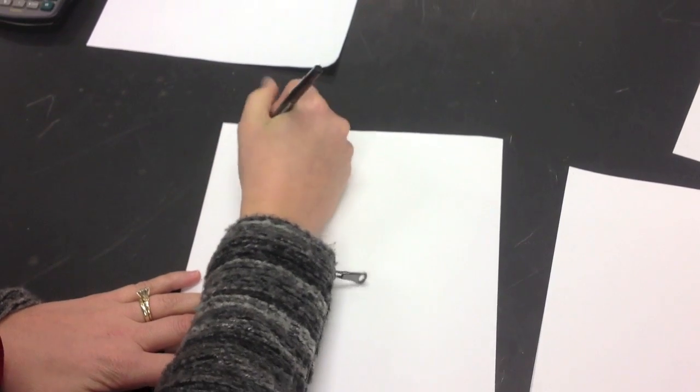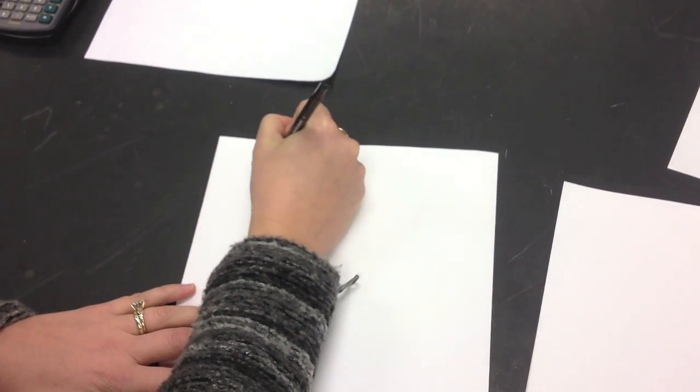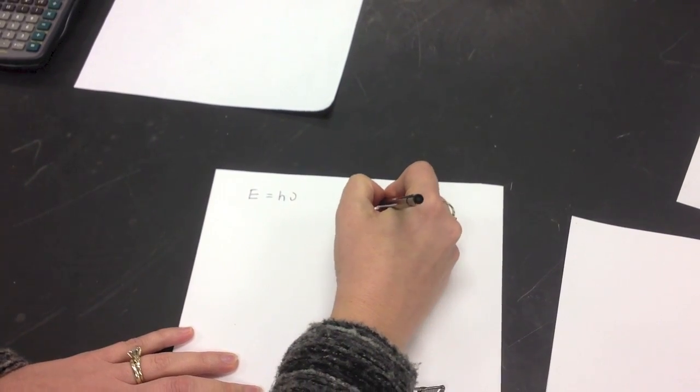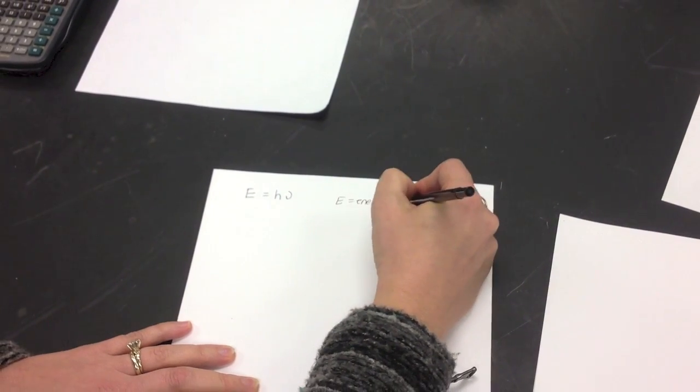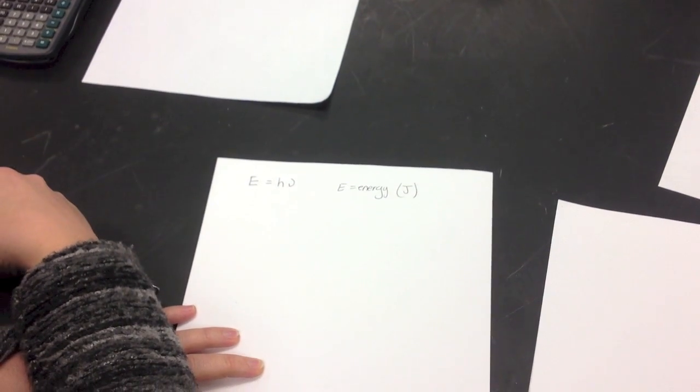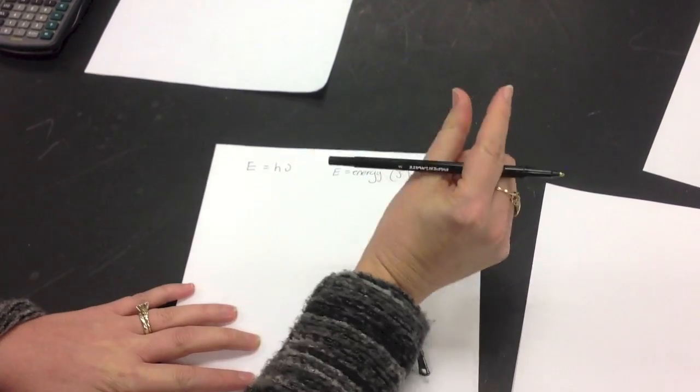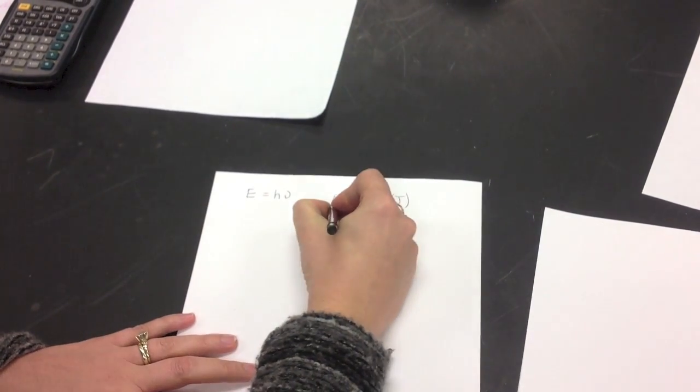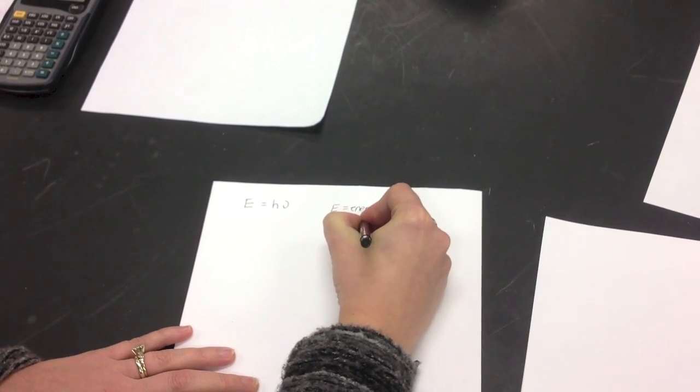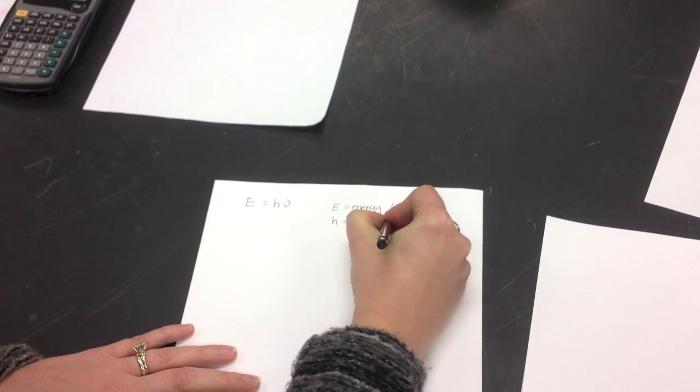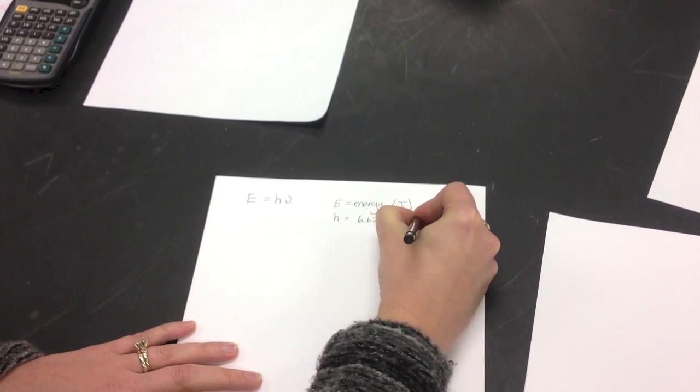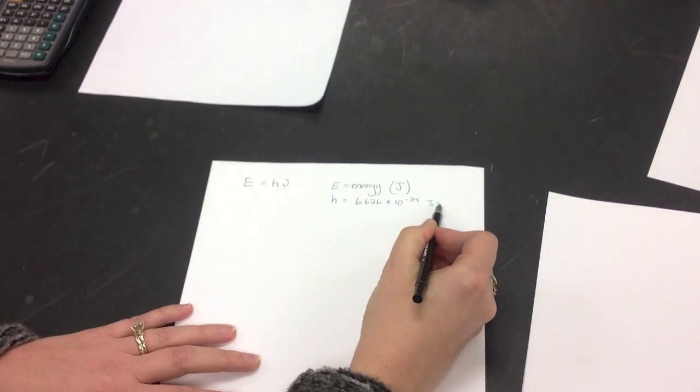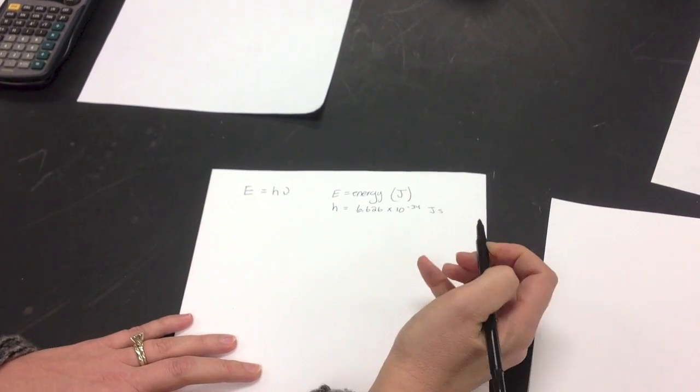So there's two equations that you need to know for this. One is E equals H nu. Now E stands for energy, and the units for that are joules. Now your numbers are going to be small when you're solving for energy because you're actually solving for a very small packet of energy called a photon. H is Planck's constant, and its value is 6.626 times 10 to the negative 34 joule seconds. The unit is joules times seconds. That's not a plural J.